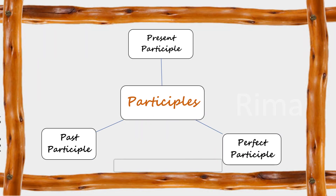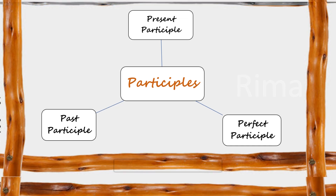Participles, as you can see on the screen, are divided into three types: present participle, past participle, and perfect participle. The first two types you are already familiar with, but today we are going to discuss all three types of participles in detail. So let's see how they are formed.